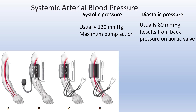This pressure — the diastolic — really results from afterload, or the back pressure on the aortic valve. We can actually calculate a mean between the systolic and diastolic pressure. To do that, we have to calculate the pulse pressure, which is the difference between systolic and diastolic, and in this situation would be 40 millimeters of mercury.